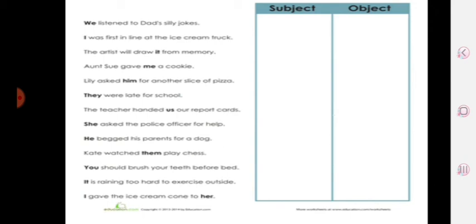Next is 'it is raining too hard to exercise outside.' Here also 'it' is before the verb, so 'it' is a subject pronoun.